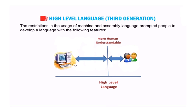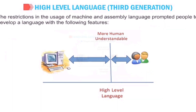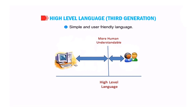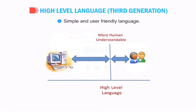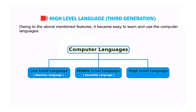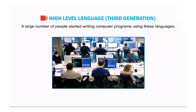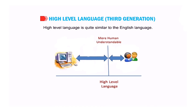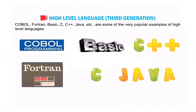The restrictions in the use of machine and assembly language prompted people to develop a language with the following features: simple and user-friendly — a language that is easy for humans to understand — and machine independent. Because of these features, it became easy to learn and use computer languages. With the coming of high-level languages, a large number of people started writing computer programs. High-level language is quite similar to the English language. Some very popular high-level languages are COBOL, FORTRAN, BASIC, C, C++, Java, and others.